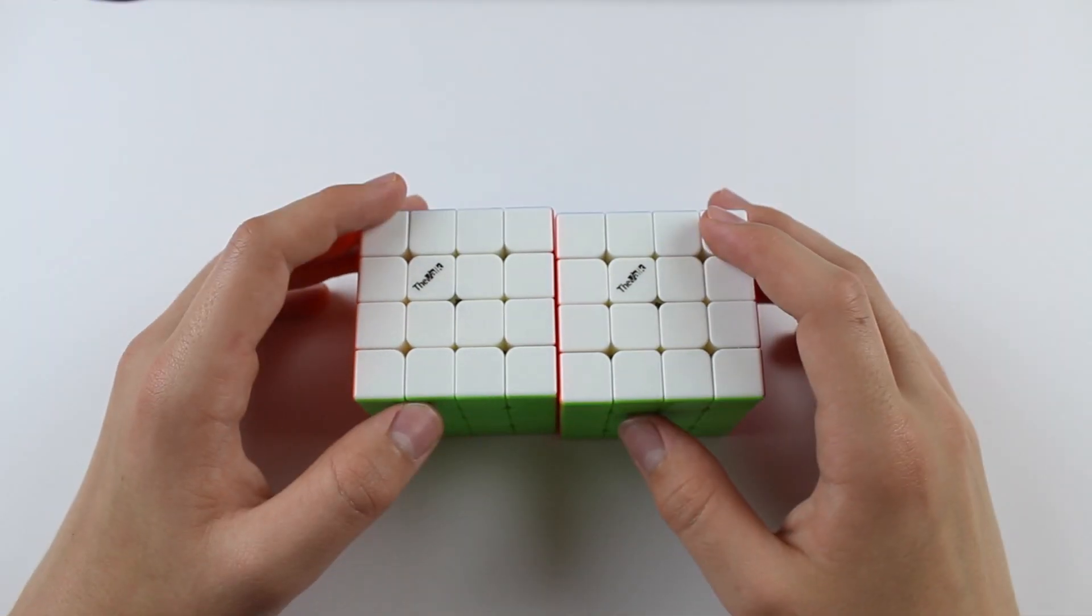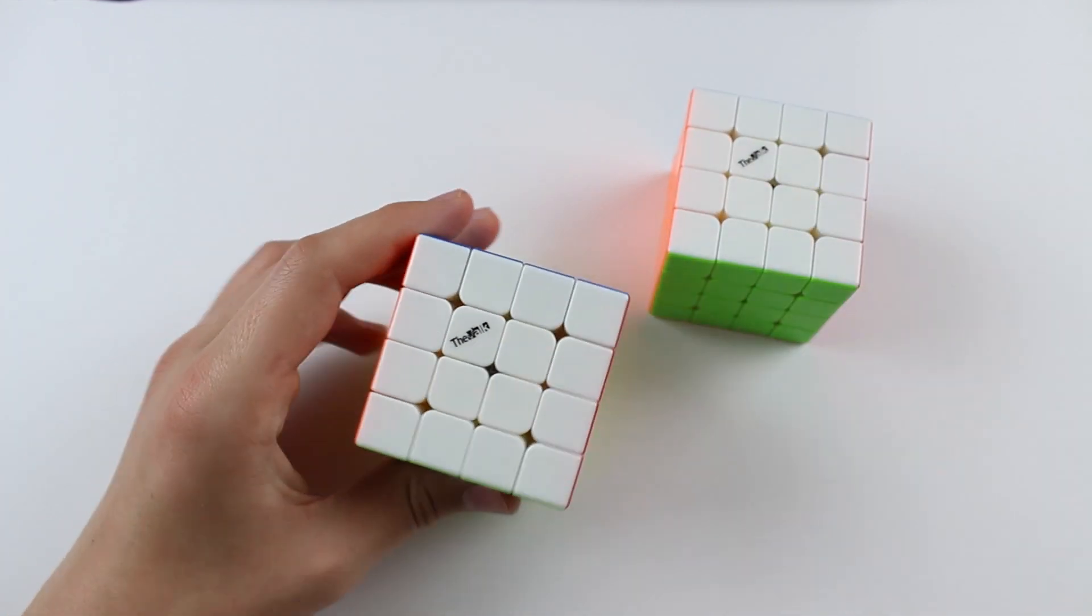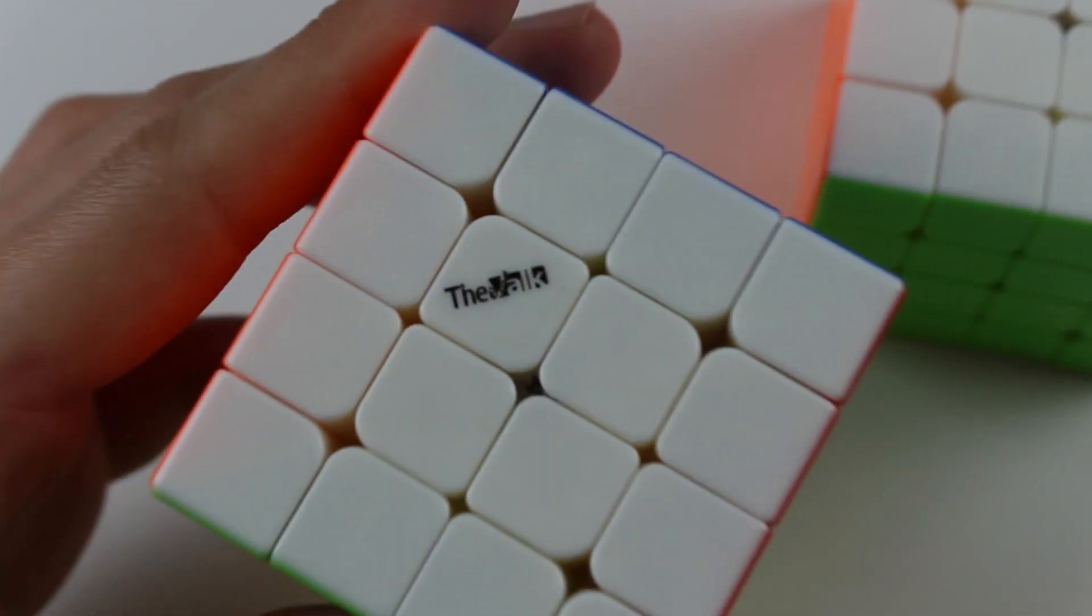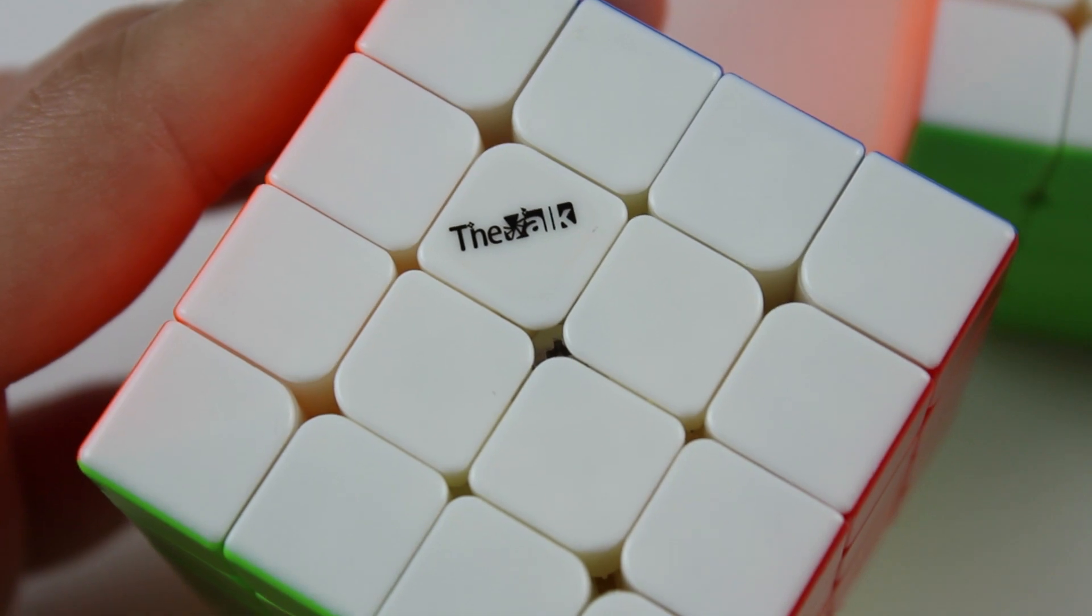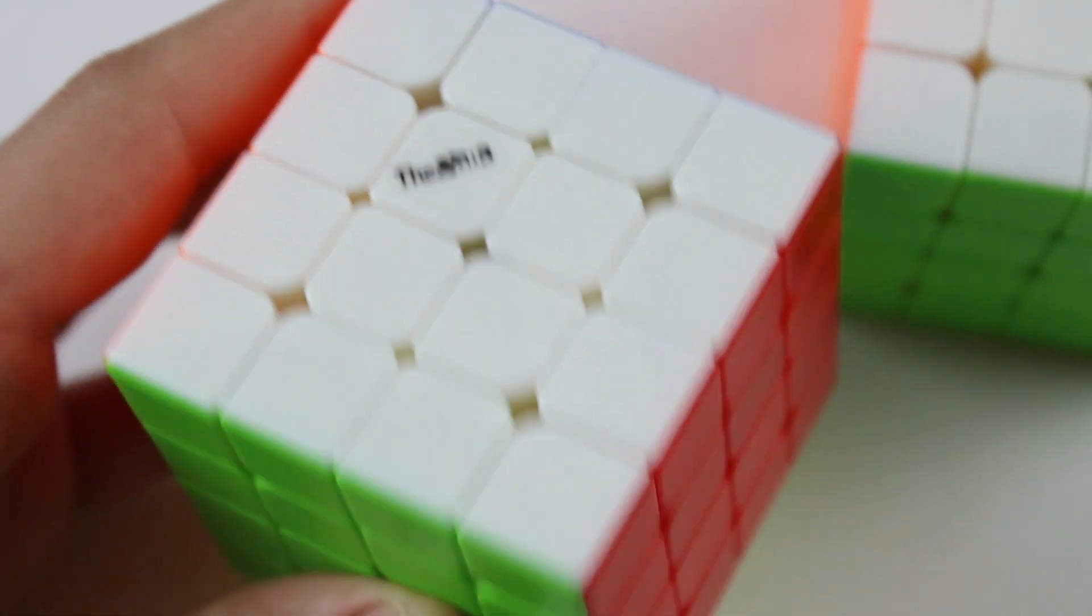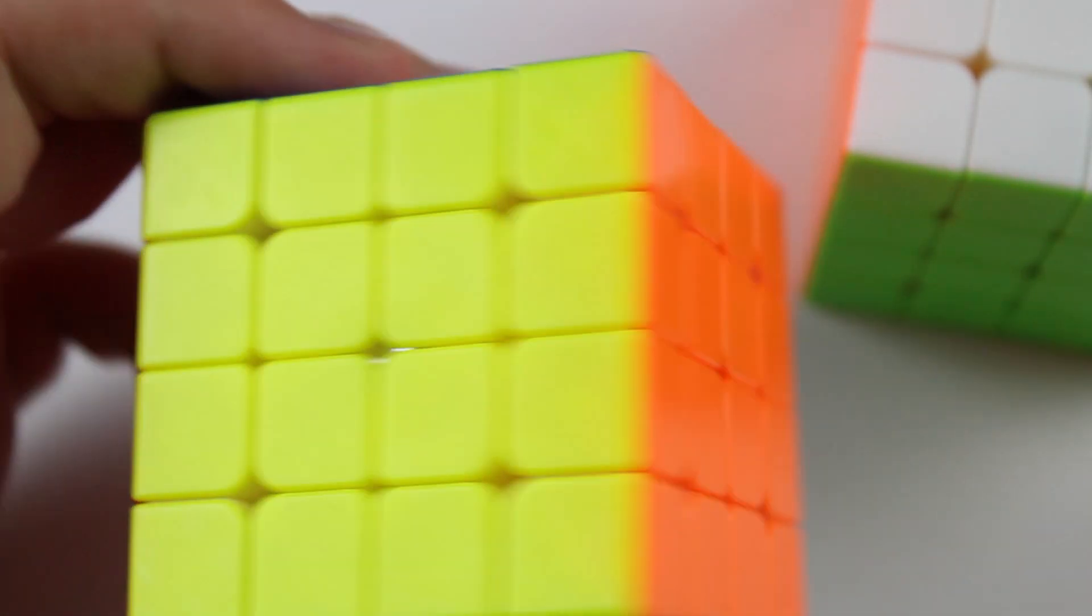These cubes are very visually appealing right out of the box. They have the nice little Valk sticker right there, as usual, on these sorts of cubes.